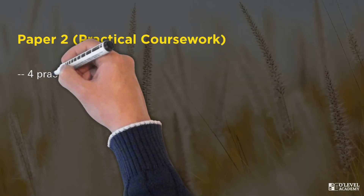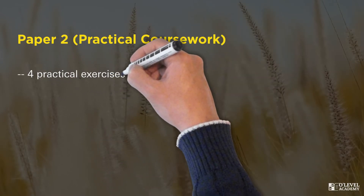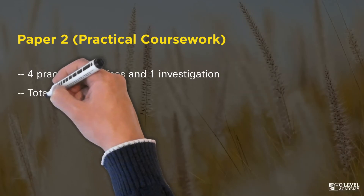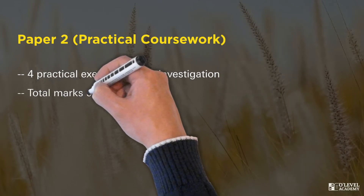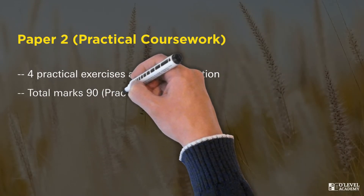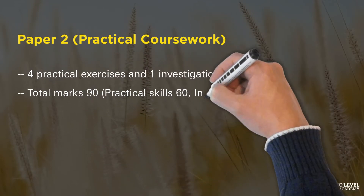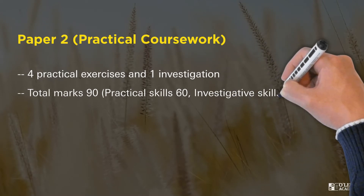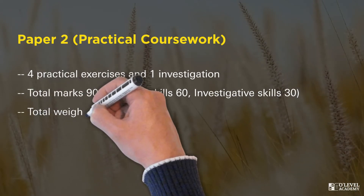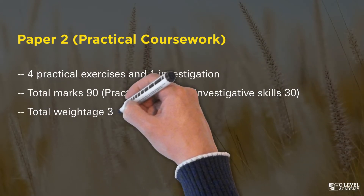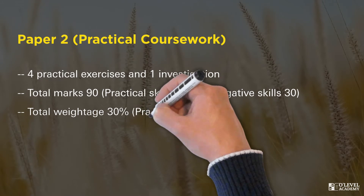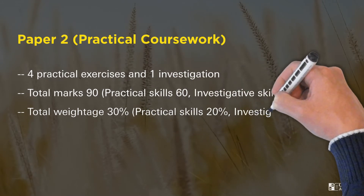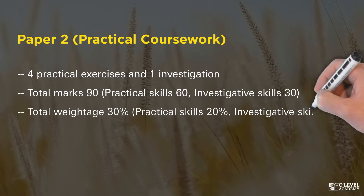Paper 2 is Practical Coursework. There are four practical exercises and investigations that candidates are required to carry out. A total of 90 marks are allocated for this paper: 60 for practical skills and 30 for investigative skills. The total weightage for Paper 2 is 30%, divided as 20% for practical skills and 10% for investigative skills.